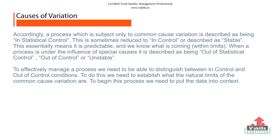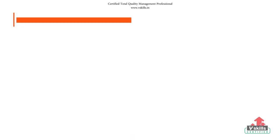Accordingly, a process which is subject only to common cause variation is described as being in statistical control, sometimes reduced to 'in control' or described as 'stable'. This essentially means it is predictable and we know what is coming within limits. When a process is under the influence of special causes, it is described as being out of statistical control, out of control, or unstable. To effectively manage a process, we need to be able to distinguish between in-control and out-of-control conditions. To do this, we need to establish what the natural limits of the common cause variation are, and put the data into context.